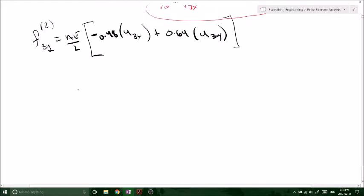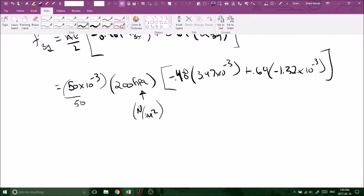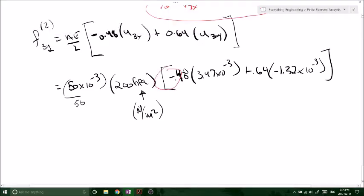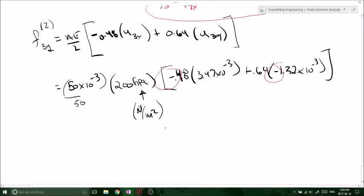Times U3X plus 0.64 times U3Y. So what does this give us? We've got the area. Okay, so just make sure you recognize that we've got this one's negative, and we've got another negative here. So we're going to get a negative number. So keep that in mind. So F3Y due to number 2 was equal to minus 50.2 kilonewtons, okay?